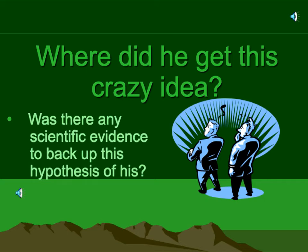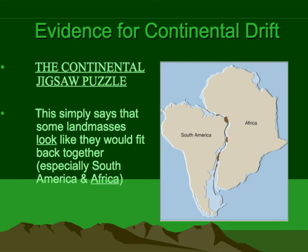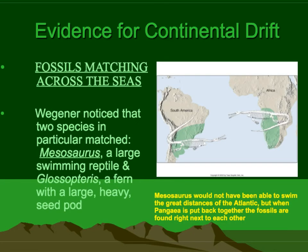That really went against the standard thinking of the time. So where did he get this idea? What was the evidence? For our purposes, there are four main lines of evidence, and you need to understand these four and be able to explain and defend them. The first is the continental jigsaw puzzle — probably the most obvious. If you look at the land masses, some of them simply look like they would fit back together. Africa fits nicely up against South America, and the east coast of the United States would actually fit nicely in as well.